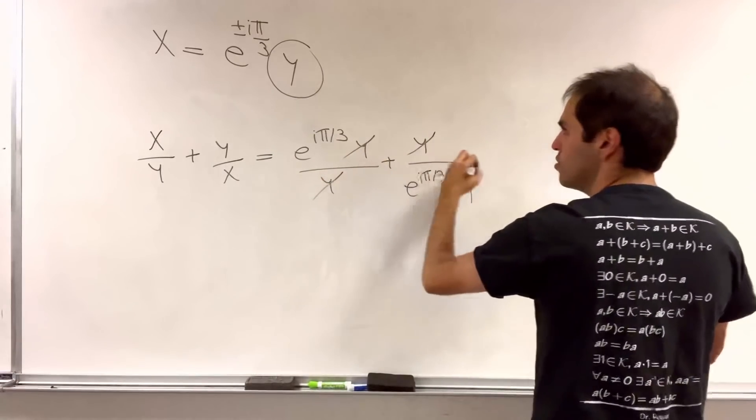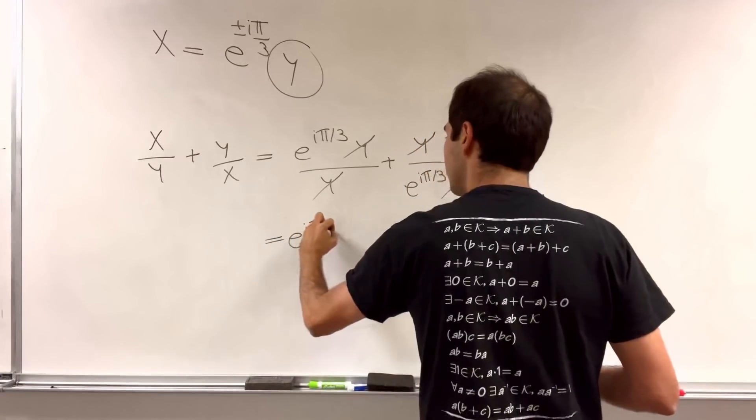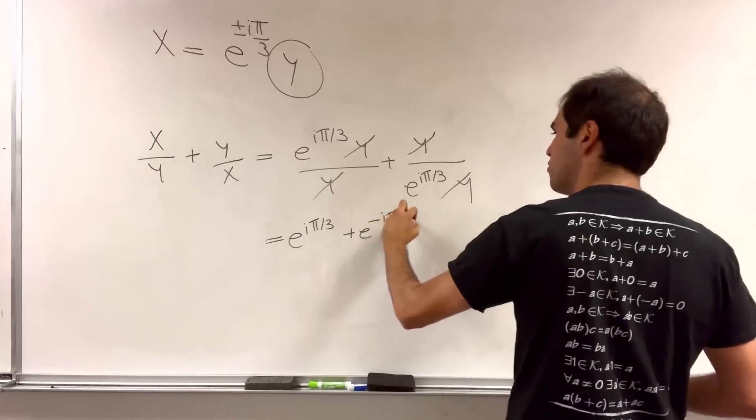So, this cancels out. And then you just end up with e to the i pi over 3 plus e to the minus i pi over 3.